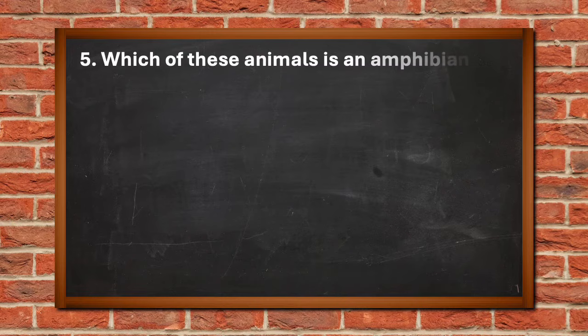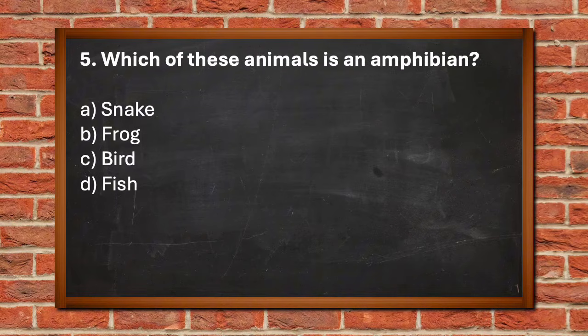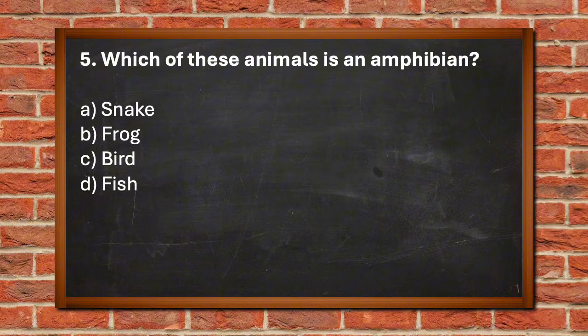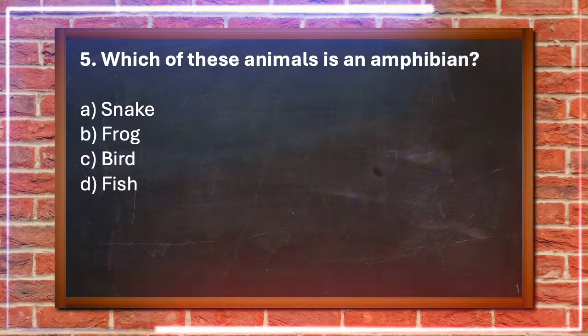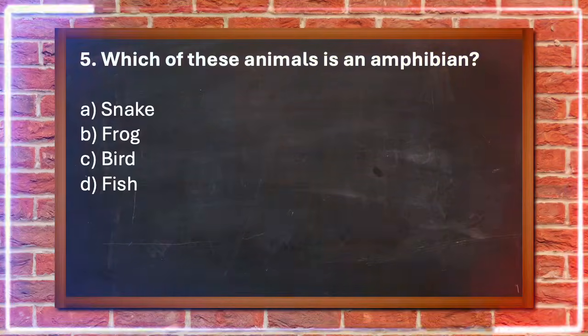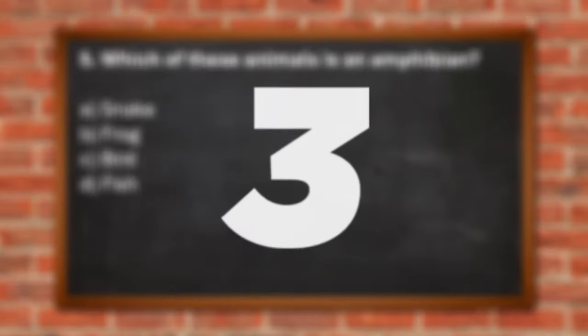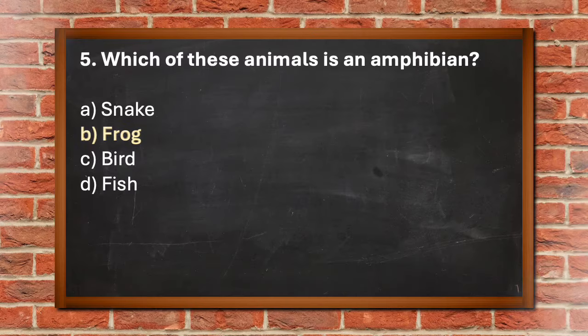Number 5. Which of these animals is an amphibian? A. Snake, B. Frog, C. Bird, D. Fish. The answer is B. Frog.